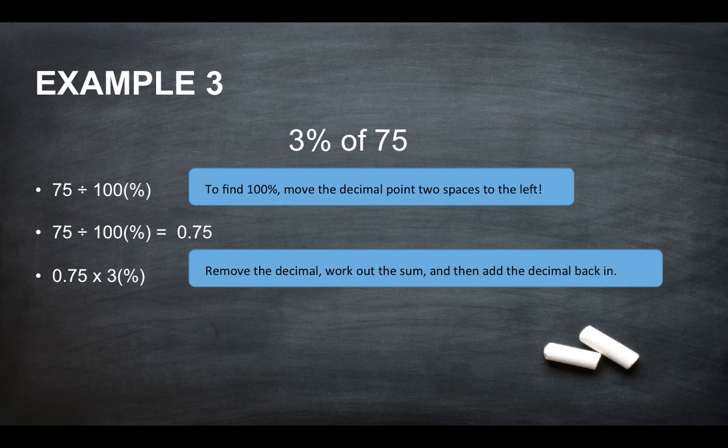Remove the decimal point and just do the calculation. So 75 times 3 will give you 225.